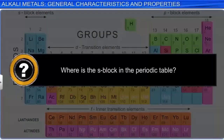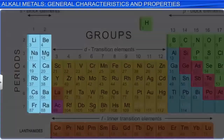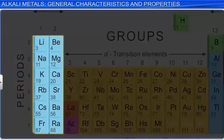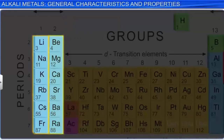The s-block is found in the first two columns or groups of the periodic table. This region is called the s-block because all the outermost electrons of these elements occupy the s-orbital. There are two columns in the s-block because an s-orbital can hold a maximum of two electrons.